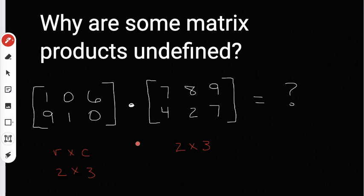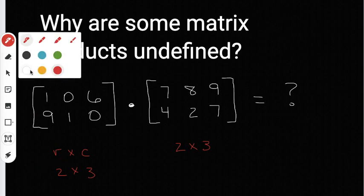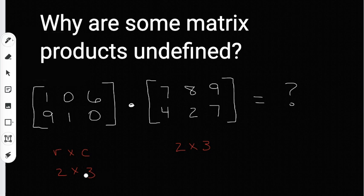Now before we multiply, we have to make sure that the inside numbers are the same. The inside numbers are the numbers that are on the inside - this three and this two. These numbers have to be equal for them to be multiplied. Since the numbers don't match up, this matrix product is undefined.